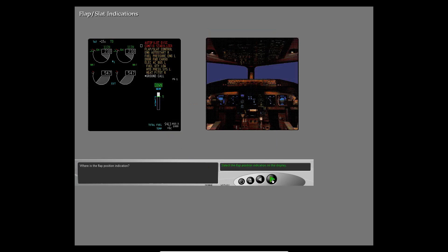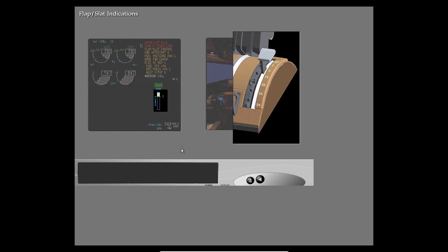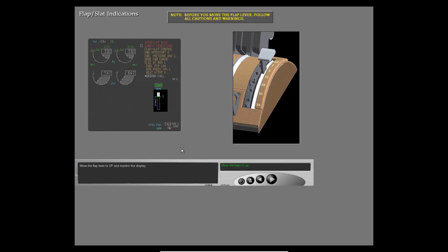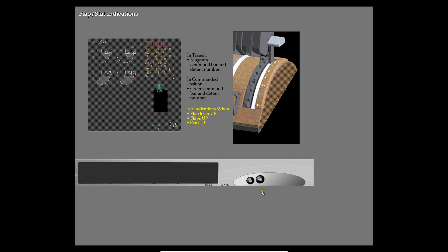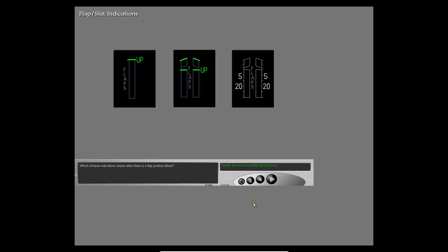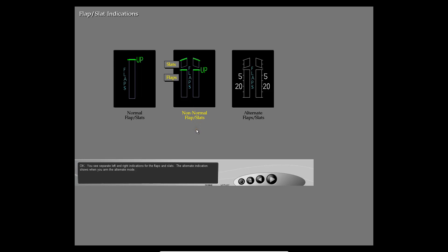Where is the flap position indication? Move the flap lever to up and monitor the display. The name of each indication goes away ten seconds after the flap lever movement. Flaps and slats are in the up position. Which of these indications shows when there is a flap position failure? This is what you see when you arm the alternate mode. You see separate left and right indications for the flaps and slats. The alternate indication shows when you arm the alternate mode.